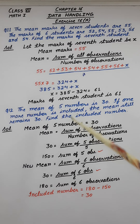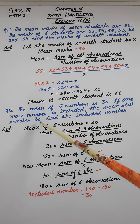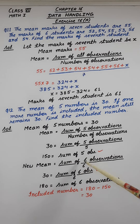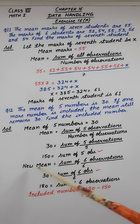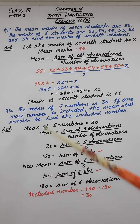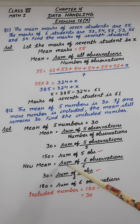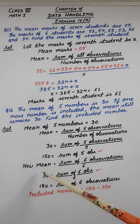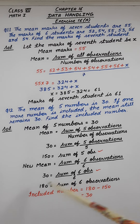Now one more number is included and after that the mean is still 30. So the new mean is sum of 6 observations upon number of observations which is 6. New mean, also 30, equals sum of 6 observations upon 6. Transposing: 30 multiplied by 6 gives 180, which equals the sum of 6 observations.